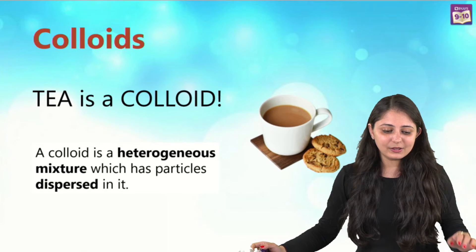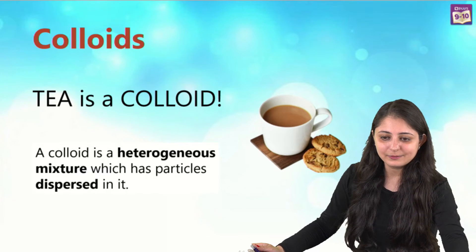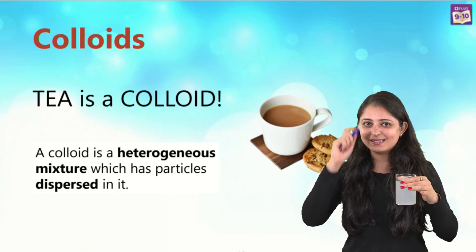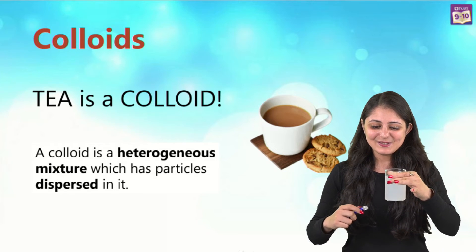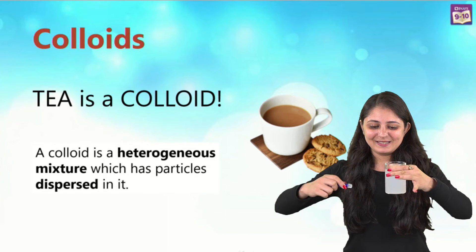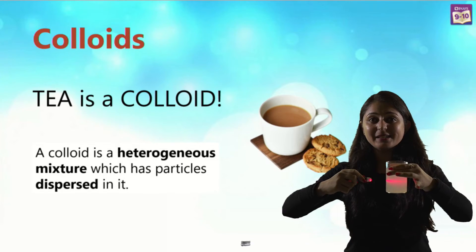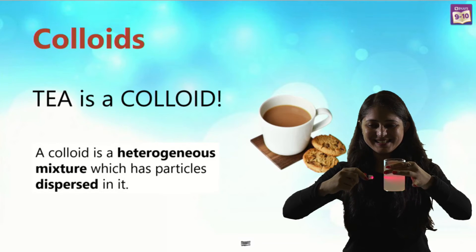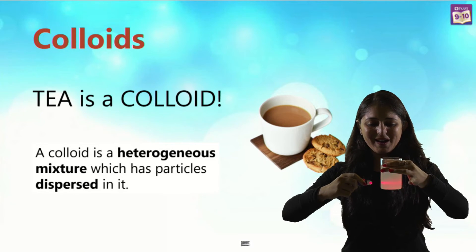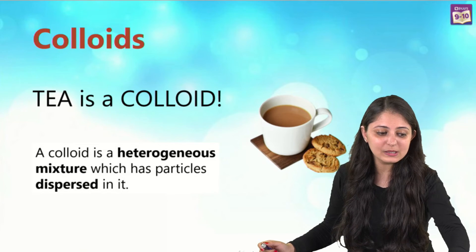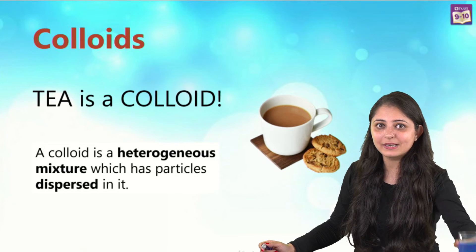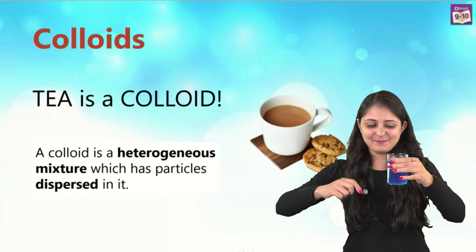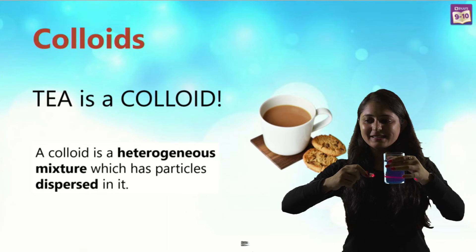We have some more heterogeneous mixtures to look at. Here we have milk — let's see what happens when we pass light through it. There you go, you can see the path being visible again. Now let's try this with paint — passing light through paint — and again you can see the path is visible.